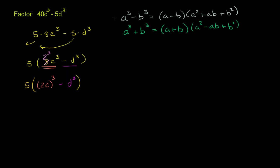Now, assuming that this is the case, we can just do a little bit of pattern matching. Because in this case, our a is 2c and our b is d. So let me write this. a is equal to 2c and our b is equal to d.